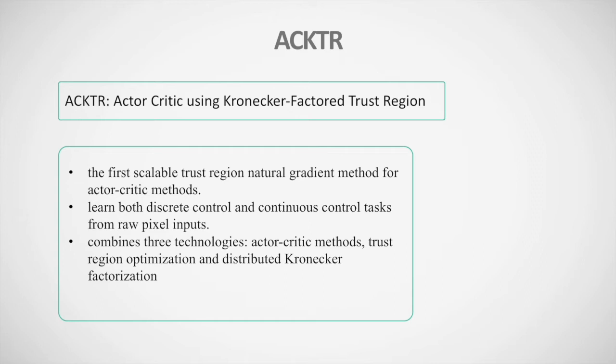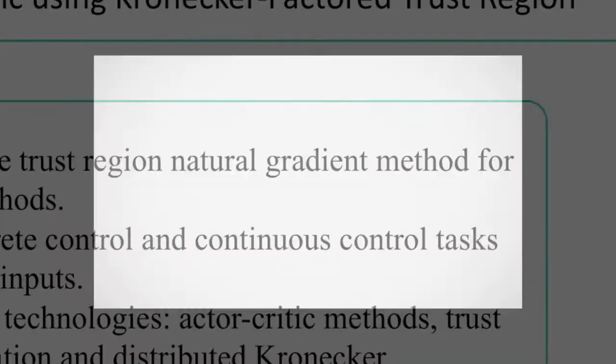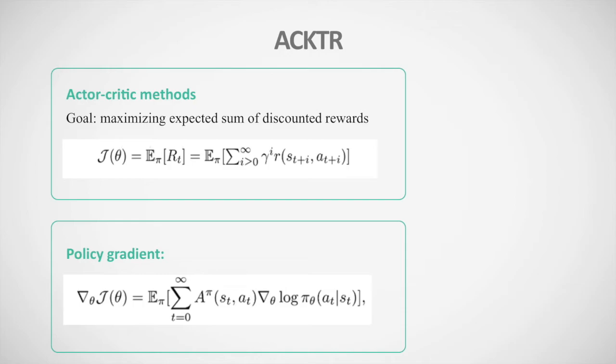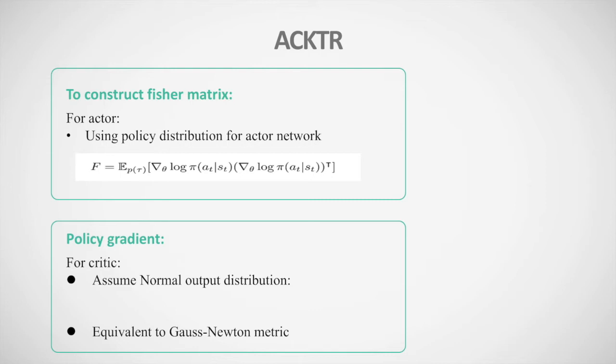ACKTR uses K-FAC for trust region optimization, which is the first scalable trust region natural gradient method for actor-critic methods. This method can learn in both discrete and continuous control tasks from raw pixel inputs. ACKTR combines three technologies: actor-critic methods, trust region optimization, and distributed Kronecker factorization. The actor-critic goal is to maximize the sum of discounted rewards with policy gradient, using policy distribution for the actor network and assuming a normal output distribution equivalent to goals and Newton metric.